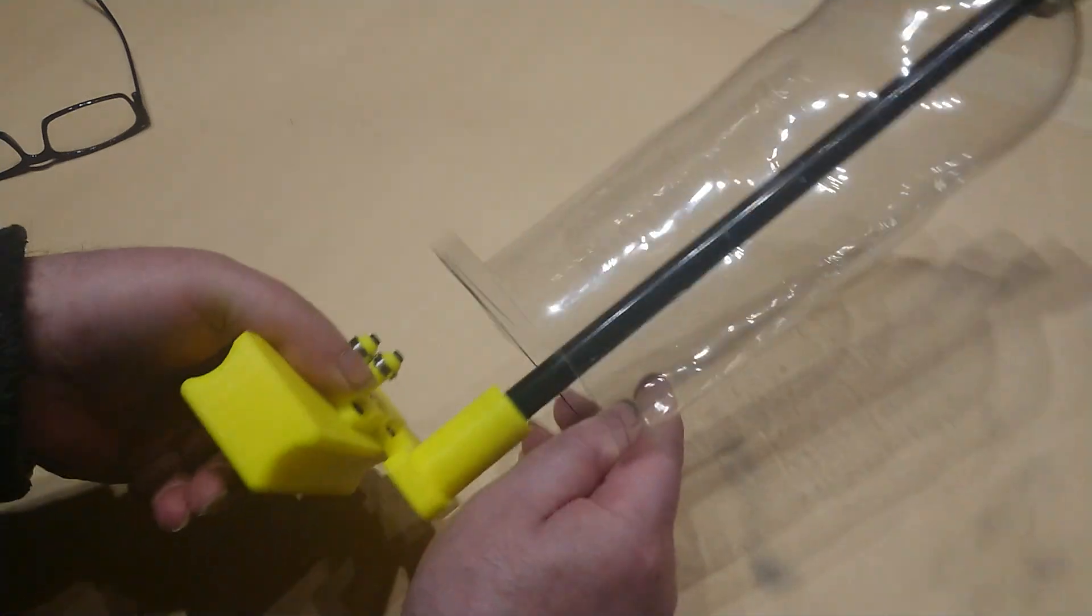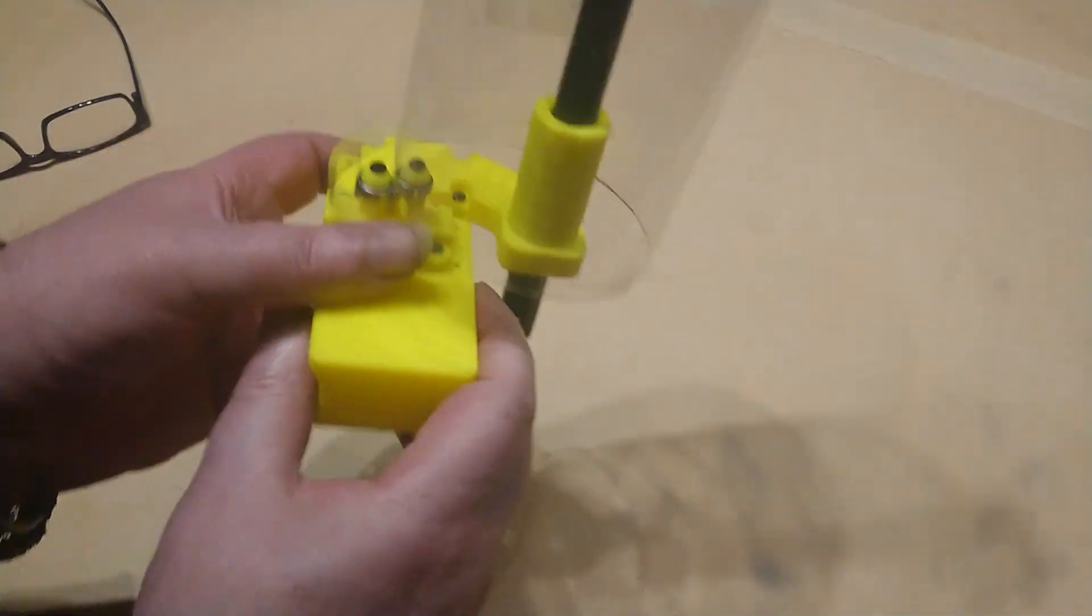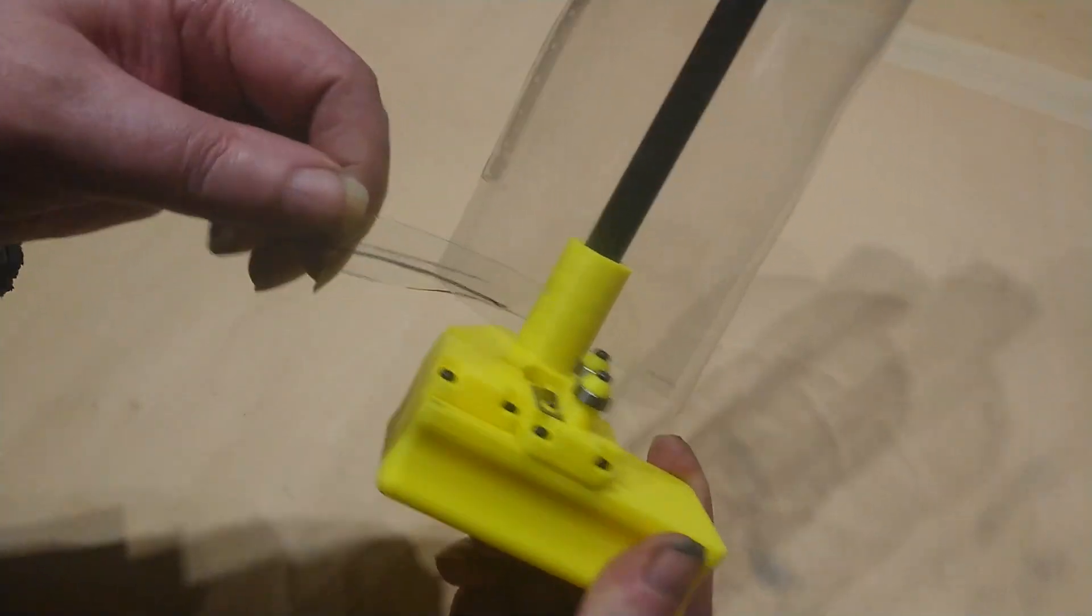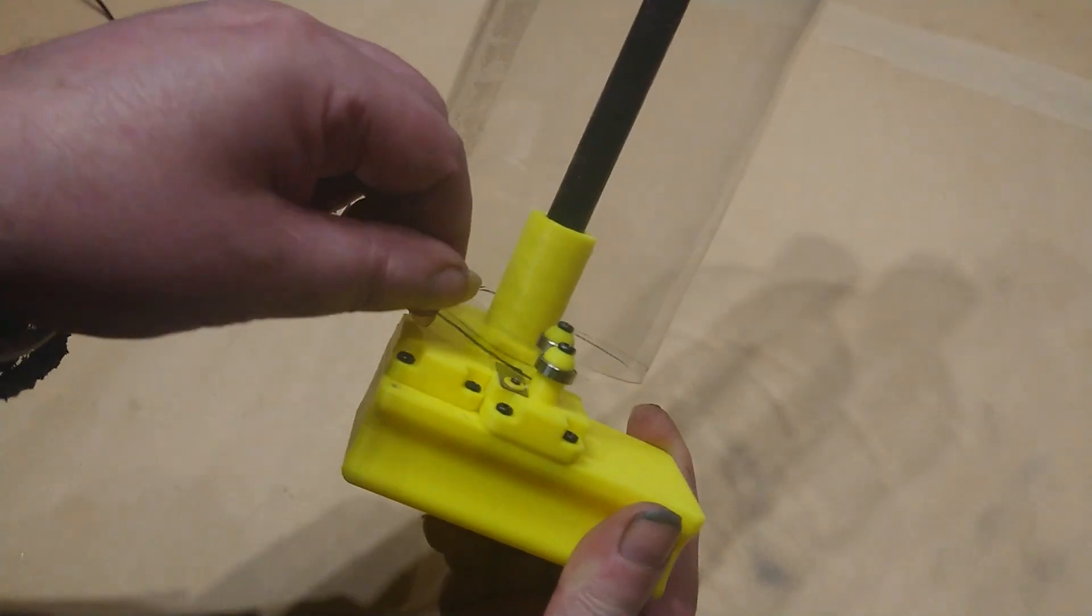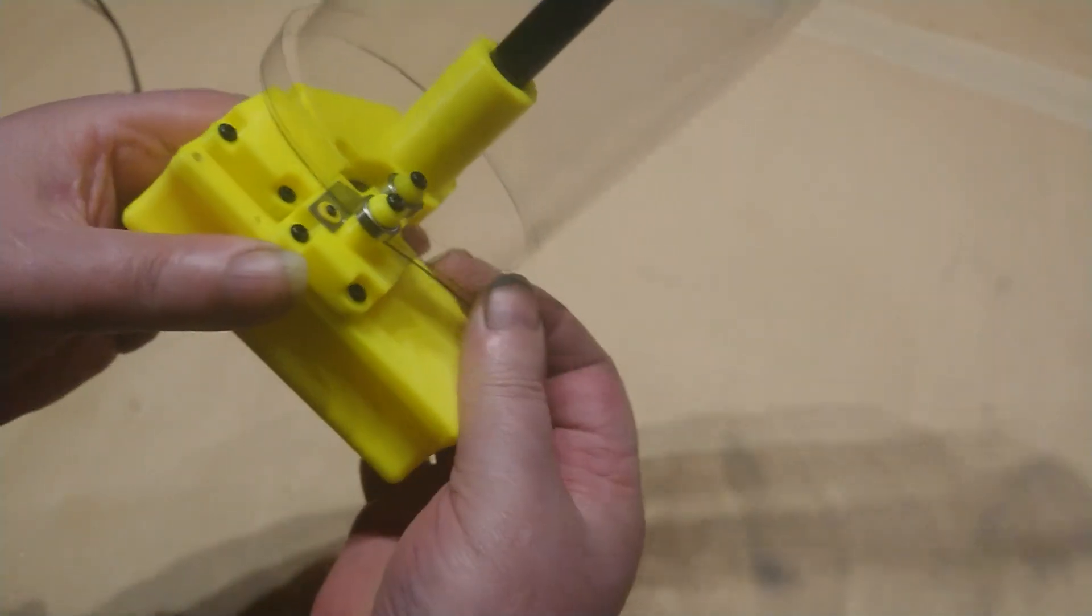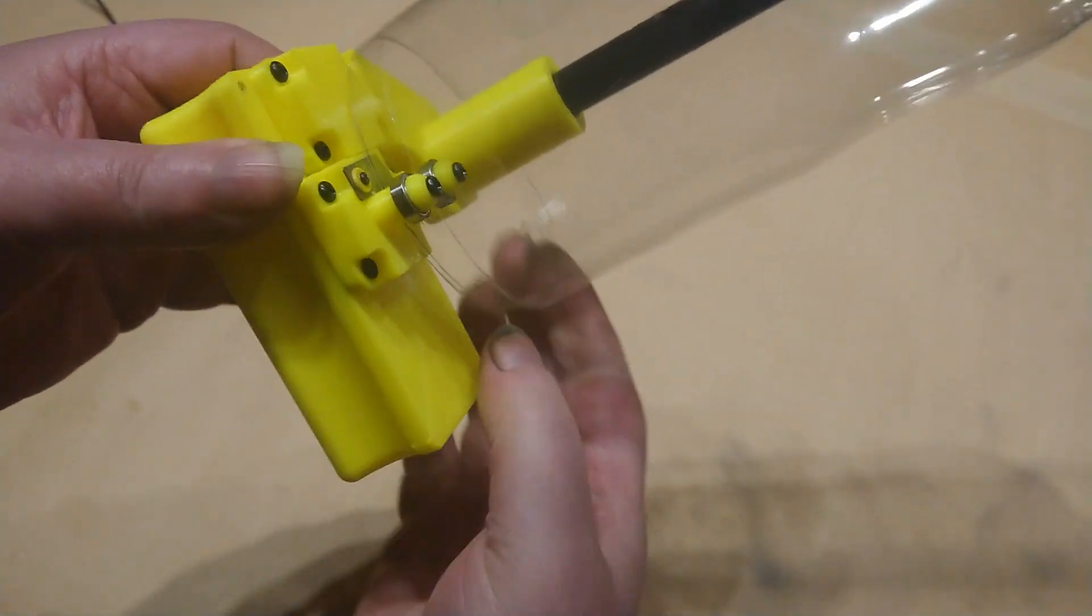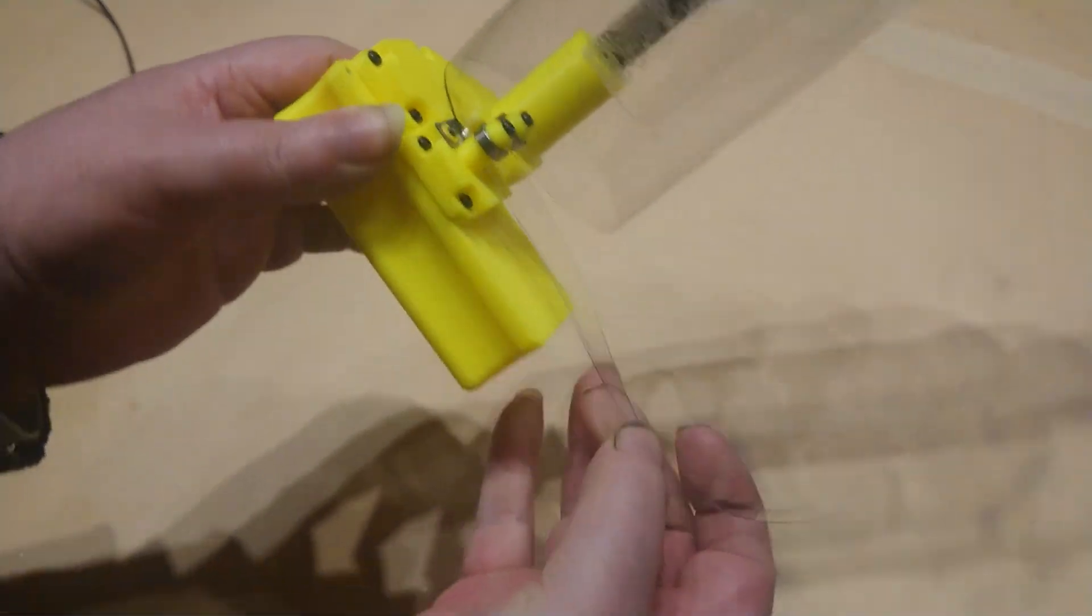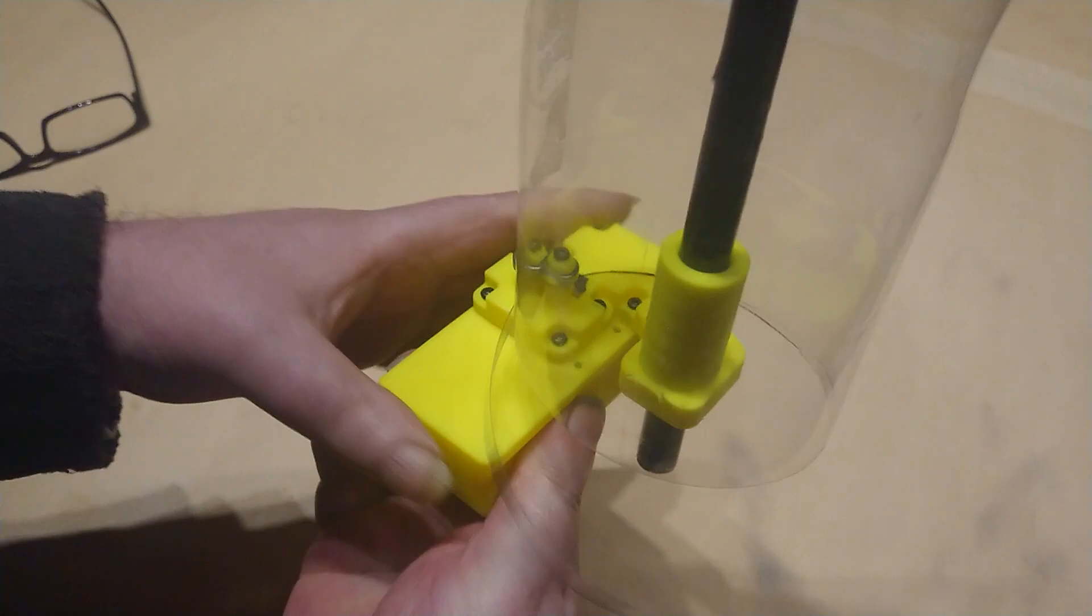And then this bit that we've got floating about, we stick that underneath the two rollers and pull it through until you've got it lined up where the cut finishes like so. Then you just...